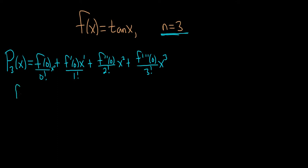The first step is to take the derivatives, so let's start by writing down tangent of x. So f(x) is tan(x), and the derivative of tangent is secant squared — so f'(x) is secant squared of x.